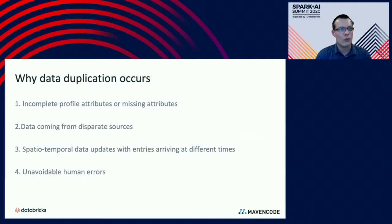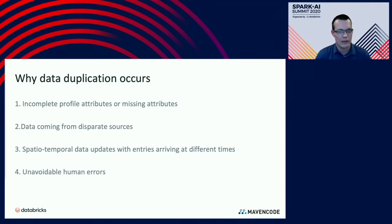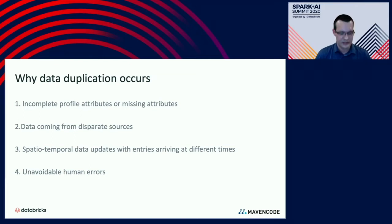So why does data duplication occur in the first place? One reason is incomplete profile information, missing attributes, leading to duplication. Sometimes you've got data coming from different sources combining into a new system — for example, one company merging with or acquiring another and trying to combine IT systems. You might also be dealing with data coming at different resolutions or time periods, accidentally ending up with multiple recordings. And finally, there are unavoidable errors: someone typing a name or address incorrectly, users making multiple accounts. All these things can lead to data duplication.